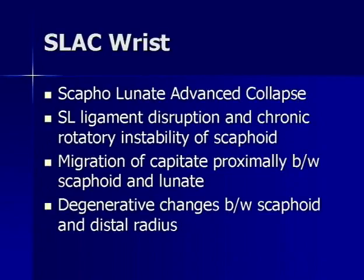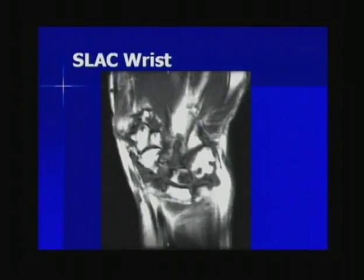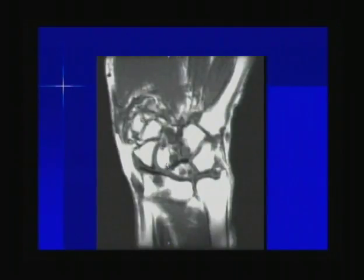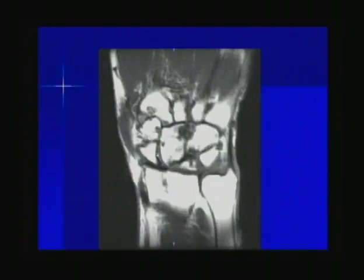Chronic rotatory instability of the scaphoid can result in scapholunate advanced collapse (SLAC wrist), caused by migration of the capitate proximally between the scaphoid and lunate, resulting in secondary osteoarthritis between the scaphoid and distal radius. Here you can see a large gap with a tear of the scapholunate ligament, the capitate migrated proximally between the scaphoid and lunate, and secondary degenerative changes at the radiocarpal joint.